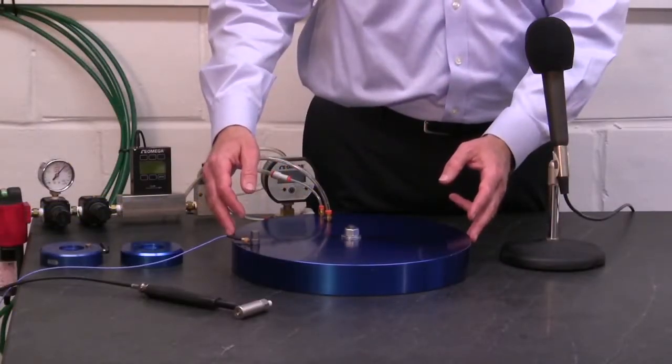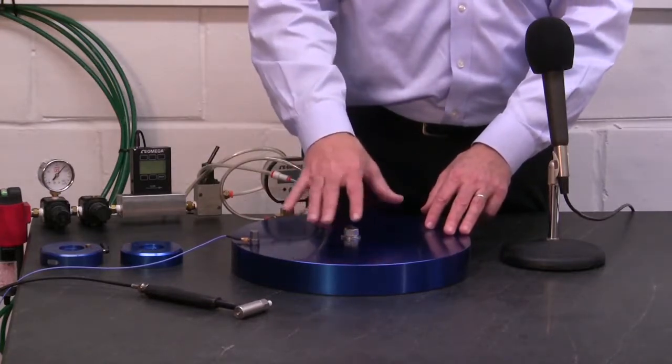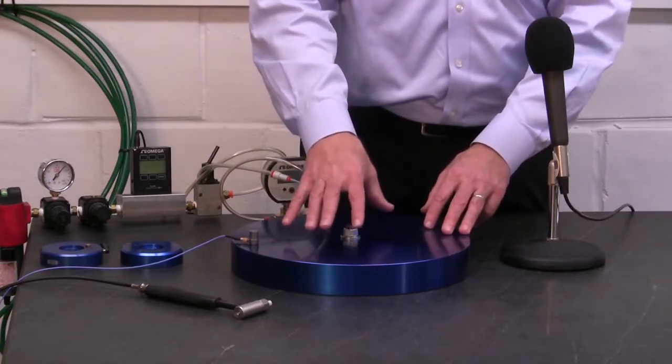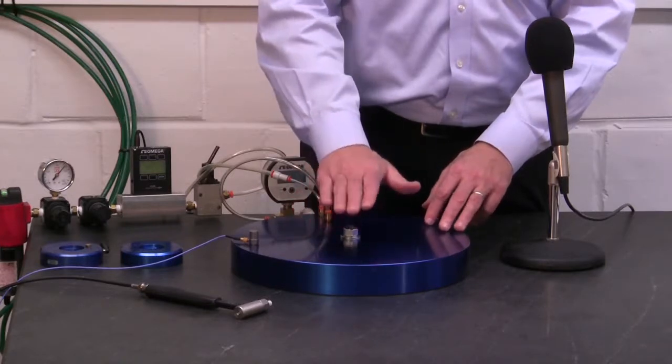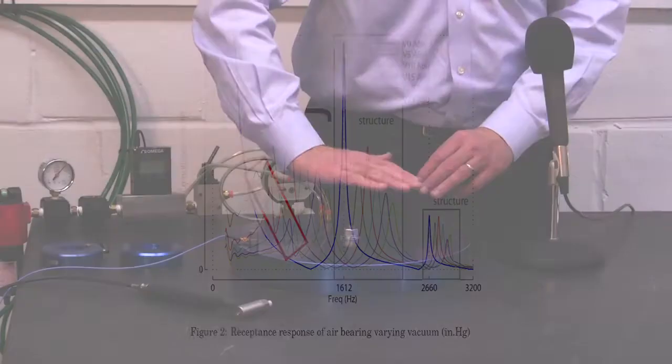With 60 psi input pressure to the bearing and no vacuum force, the bearing is floating on a relatively unstiff air film. So there was an axial mode at 36 Hz and a tilt mode shape at 50 Hz.